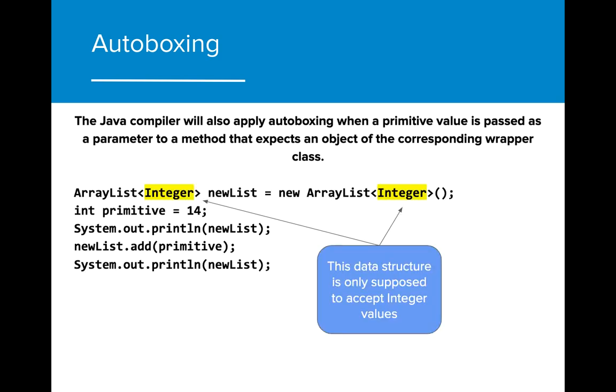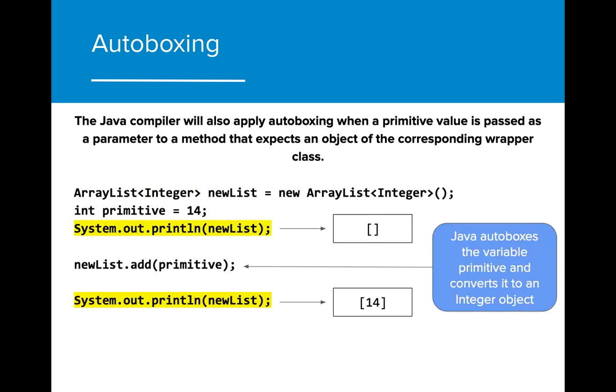We will learn in greater detail about ArrayLists. But for now, we just need to know that when instantiated with Integer, ArrayLists are only supposed to accept Integer value types as acceptable data types. When we initially print the ArrayList, the list is empty.